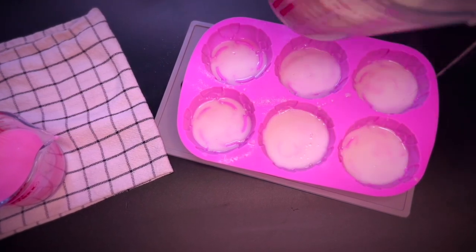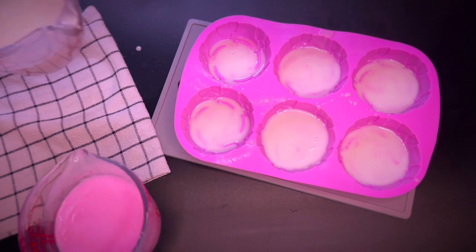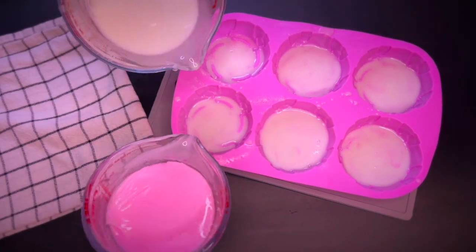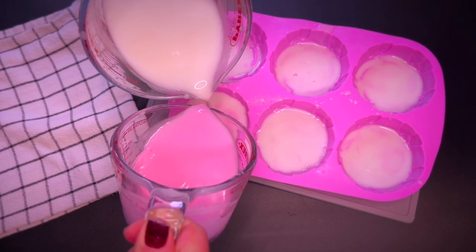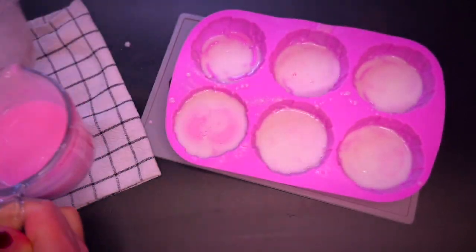Now let's try a double pour to achieve a marble type of look that you would typically get in the pot swirl for cold process soap, for those of you who know cold process soap making.